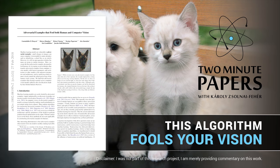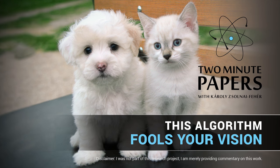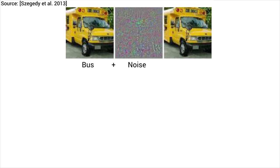Dear Fellow Scholars, this is Two Minute Papers with Károly Zsolnai-Fehér. Neural networks are amazing at recognizing objects when being shown an image, and in some cases, like traffic sign recognition, their performance can reach superhuman levels.